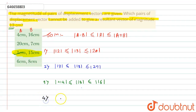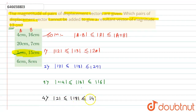For the fourth option, |6 − 8| = 2 and 6 + 8 = 14, so the range is [2, 14]. Since 13 lies within this range, option 4 also satisfies the condition. Therefore, option C remains the correct answer for this question.